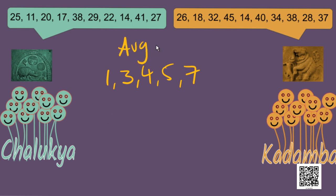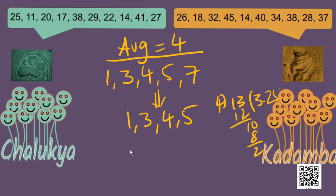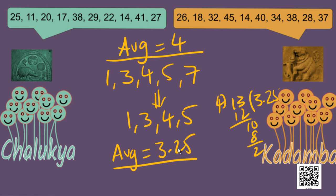Say, if I remove the number 7 from this group of numbers, we will have 1, 3, 4 and 5. What is the new average? 3 plus 1 is 4, 4 plus 4 is 8, 8 plus 5 is 13, and we have 4 numbers. So, 13 divided by 4 gives an average of 3.25. Children, look what happened to the average — when I removed the number 7, which is greater than the average, the average reduced.